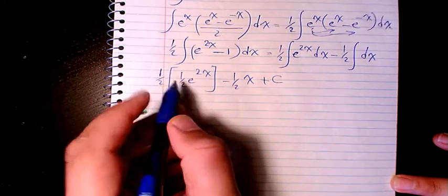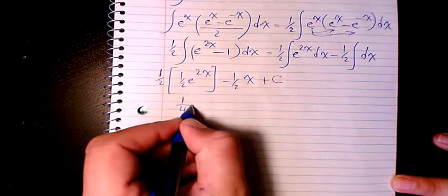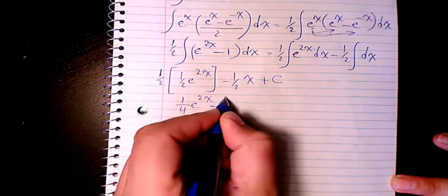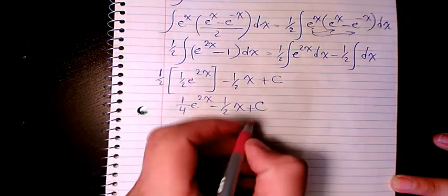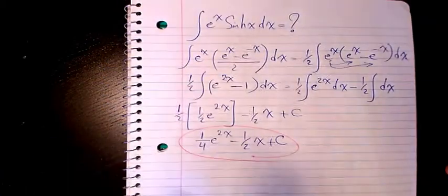So 1 over 2 times 1 over 2 is going to be 1 over 4 e to the power of 2x minus 1 over 2x plus c. So that's the final answer. I hope you enjoyed this video, please leave me a comment...